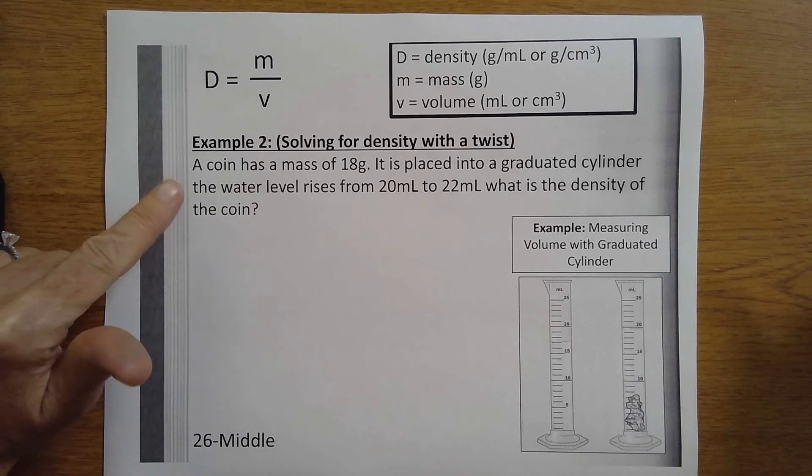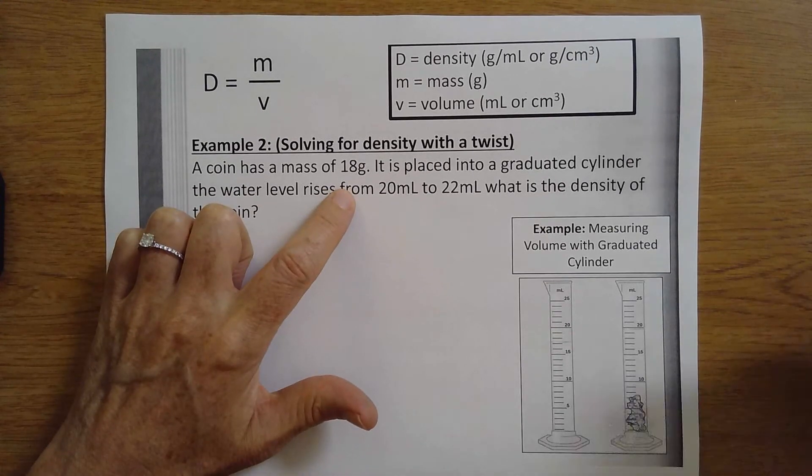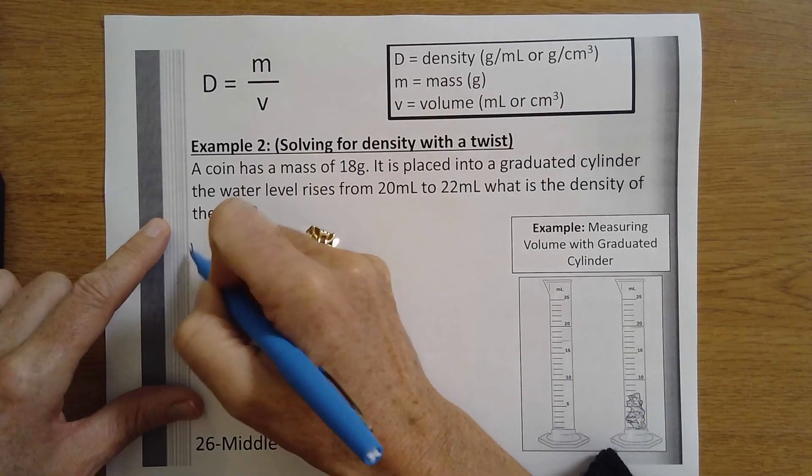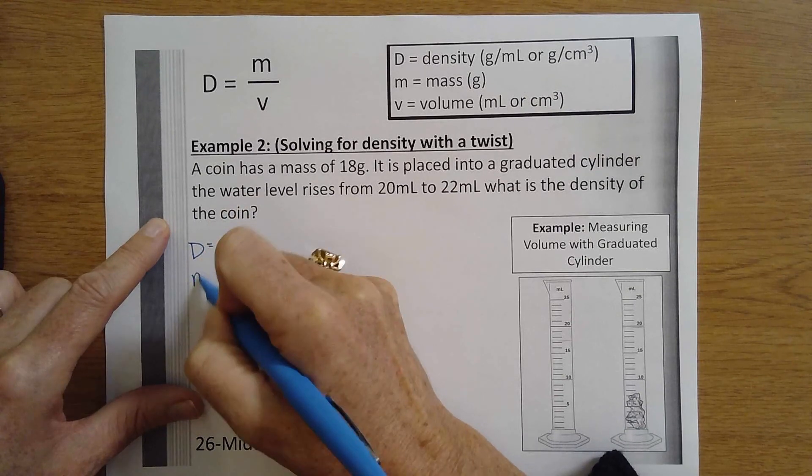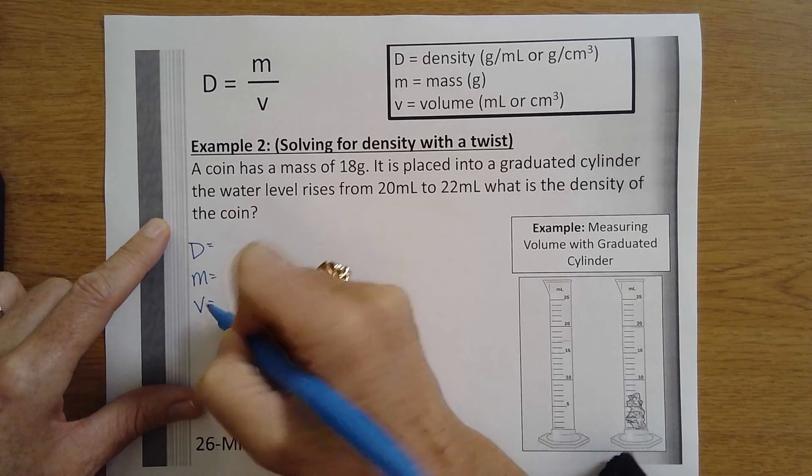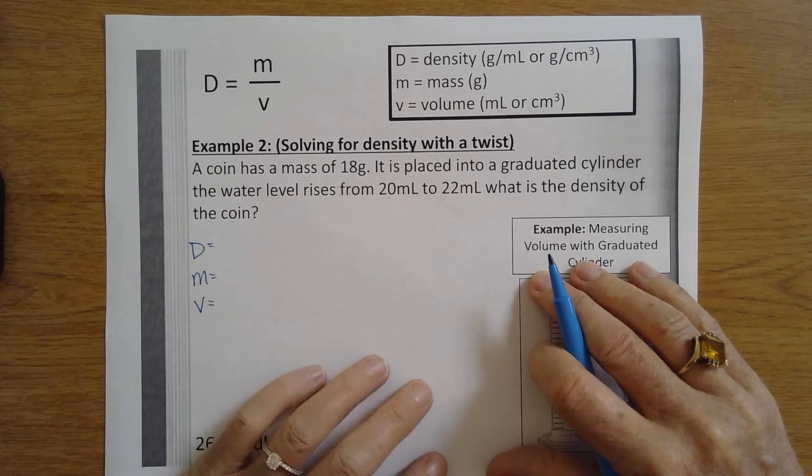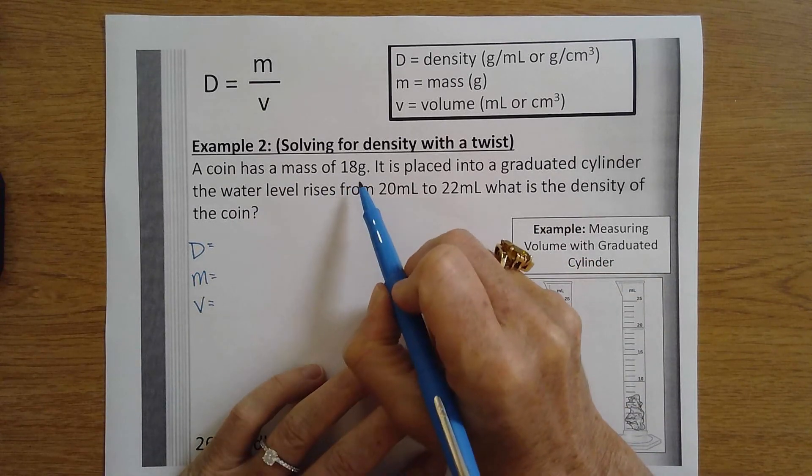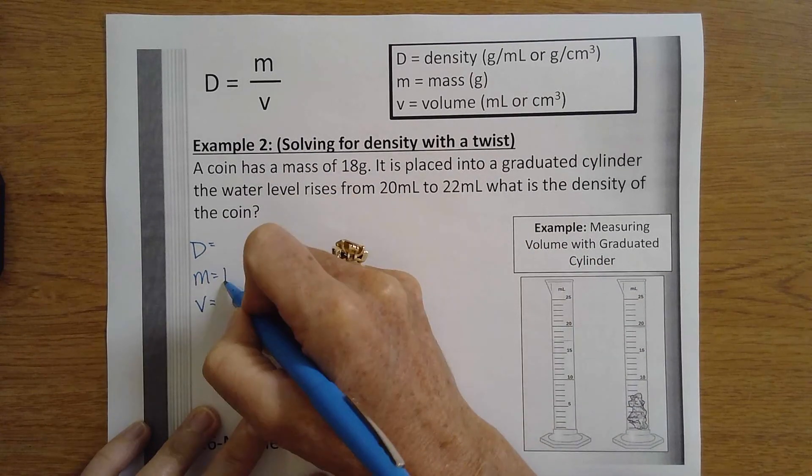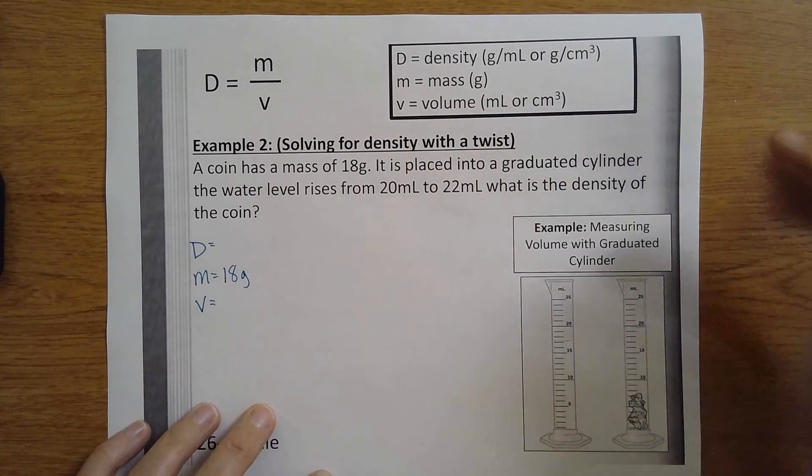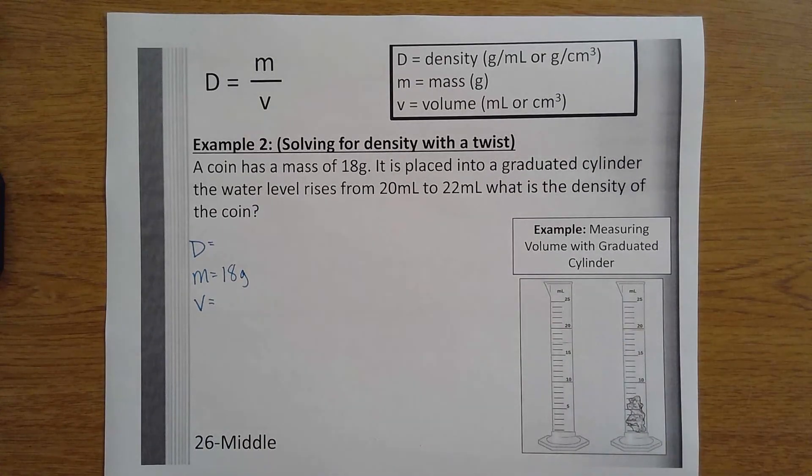This one says a coin has a mass of 18 grams, so I'm going to start right away with my D, my m, and my v in a column to the left. Right away it says a coin has a mass of 18 grams, so I'm going to write it in my list right away so I don't have to go back.